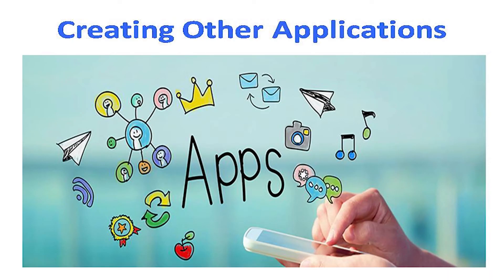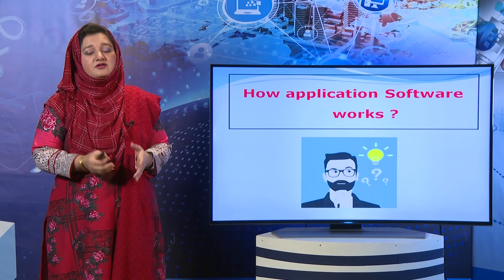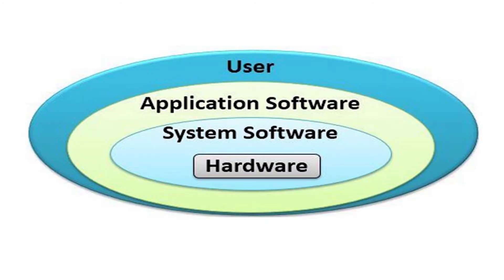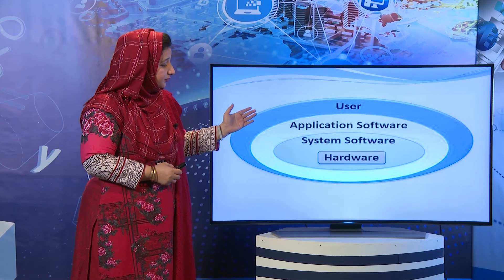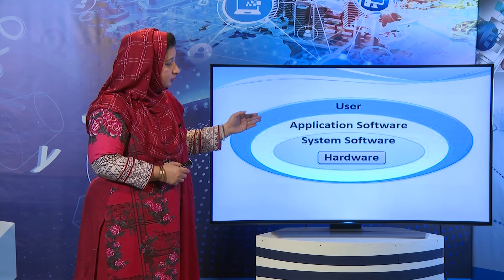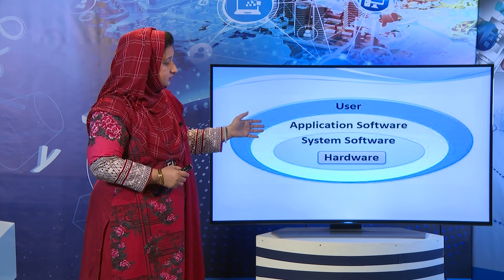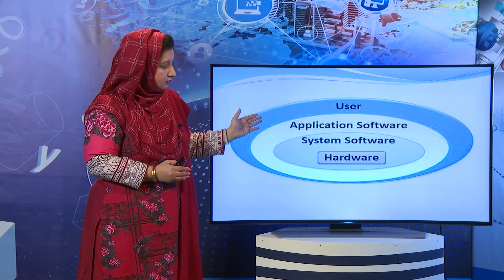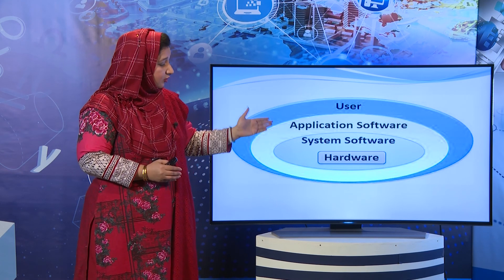Application software کیسے کام کرتا ہے؟ اسے layers میں سمجھتے ہیں: سب سے نیچے hardware layer ہے، اس کے اوپر system software یعنی operating system ہے جو directly hardware سے related ہے، اور اس کے اوپر application software layer ہے — یہ apps ہمارے operating system میں installed ہوتی ہیں اور اس سے interact کرتی ہیں. User application software سے interact کرتا ہے، application software system software سے interact کرتا ہے، اور پھر required hardware operate ہوتا ہے to function properly and perform the required task۔